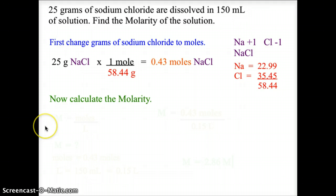Using this mole value, we can now calculate the molarity. We have all the necessary variables. Molarity equals moles divided by liters. The molarity is our unknown, moles equals 0.43, and for liters,